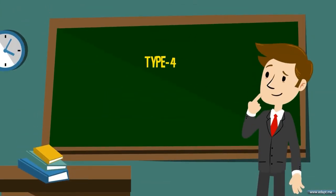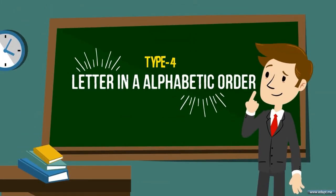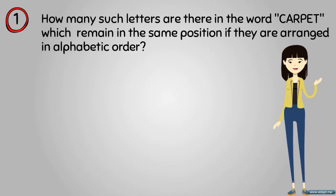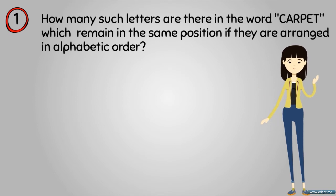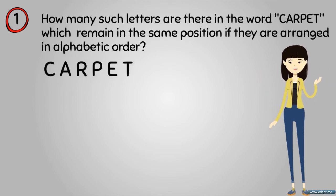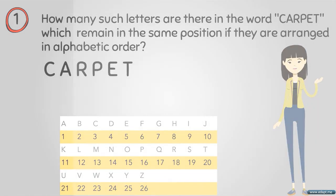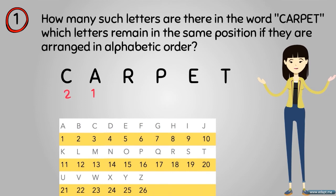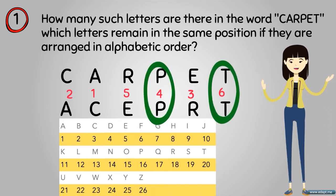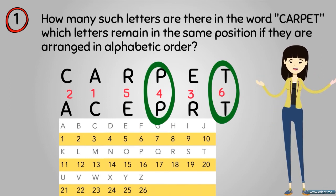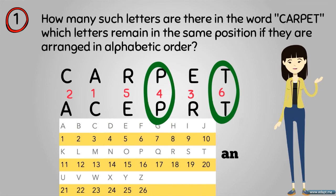Type 4: letters in alphabetical order. Example: how many such letters are there in the word CARPET which remain in the same position when the letters are arranged in alphabetical order? Arranging CARPET alphabetically gives A C E P R T. Comparing with the original word C A R P E T, the letters P and T remain unchanged in their positions (4th and 6th). Hence the answer is two.